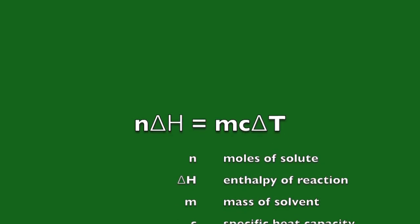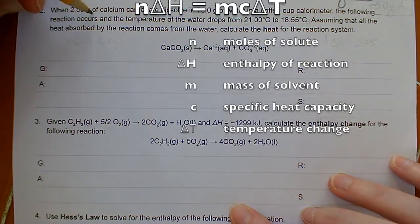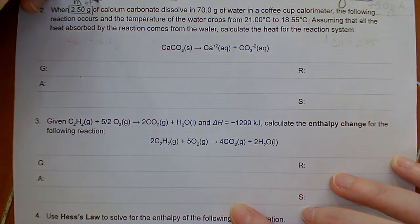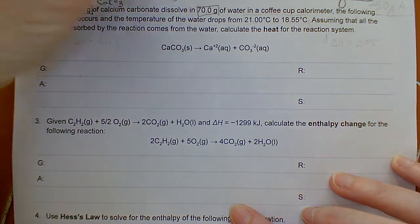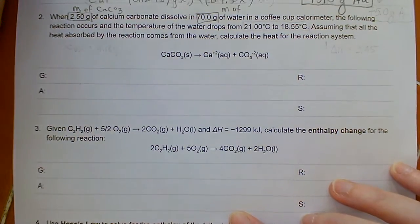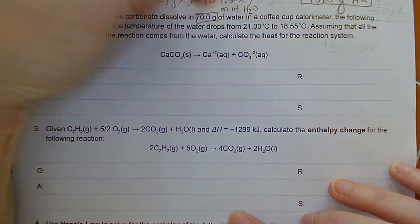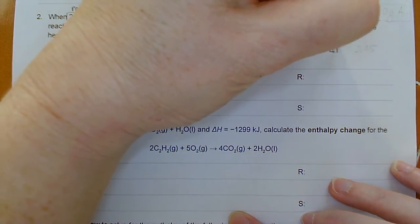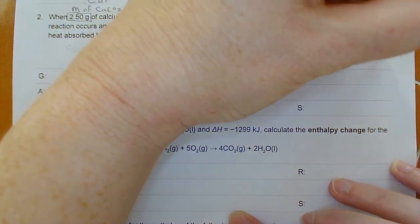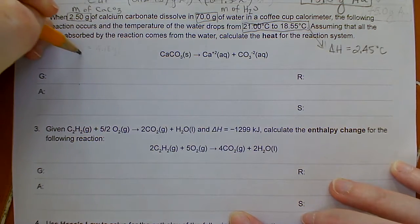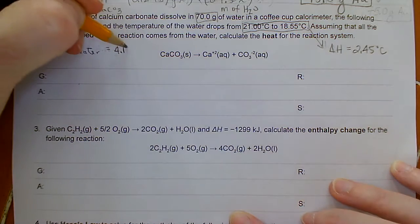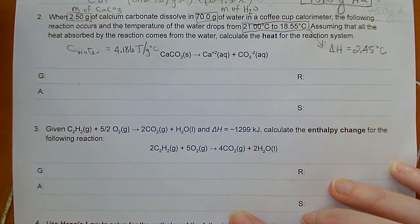Question two involves calorimetry, like we did for the lab. You are determining the amount of enthalpy generated by the dissolution of calcium carbonate in a certain amount of water, by measuring the temperature change in the system based on the heat capacity value of the water. You have a few values to look up in this case. The heat capacity of water — 4.186 joules per gram degree Celsius — is one of the values you need to make sure you're using here.